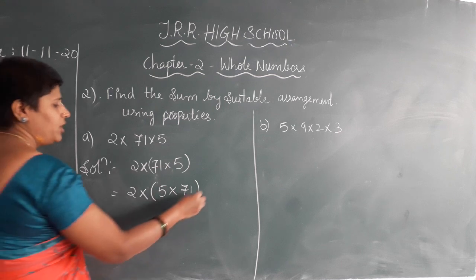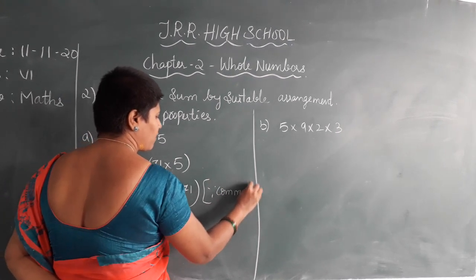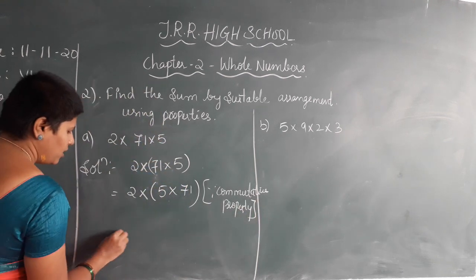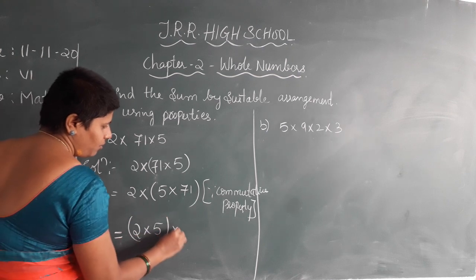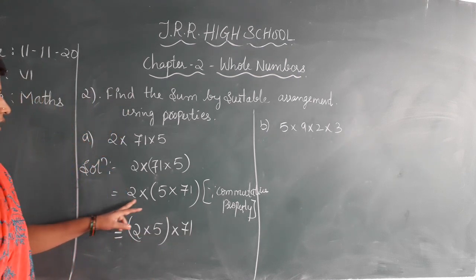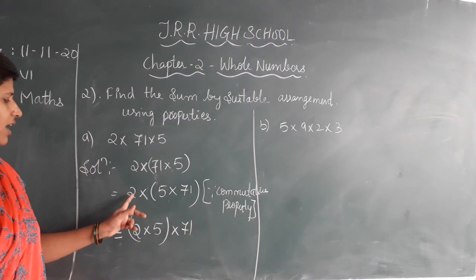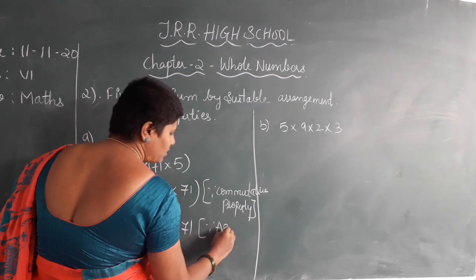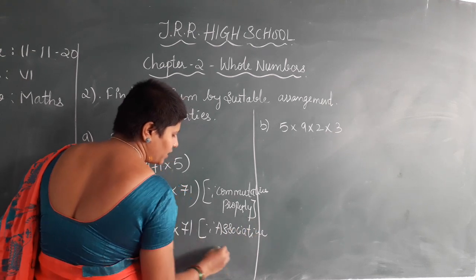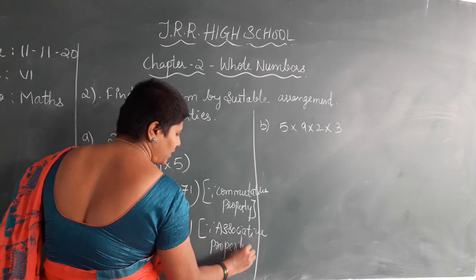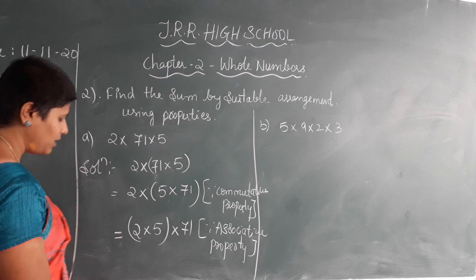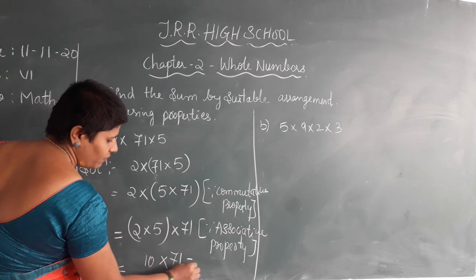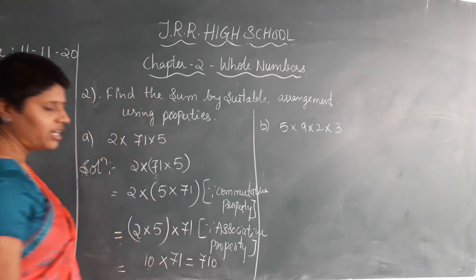2 into 5 into 71. Which property have we used? Commutative property. Now: 2 into 5 in one bracket and 71 is out of the bracket — which property? Associative property with respect to multiplication. Now you can easily multiply: 2 into 5 is 10, into 71 gives you 71 into 10, which is equal to 710.